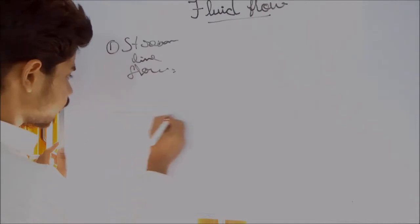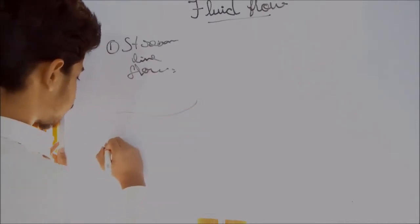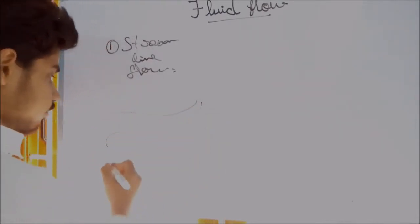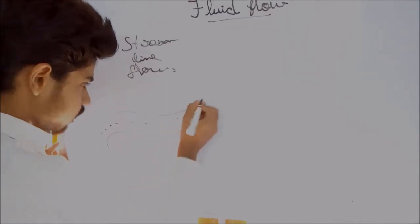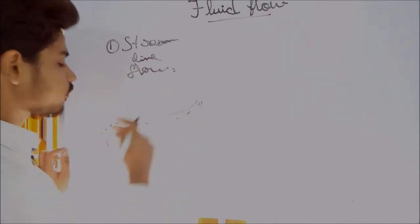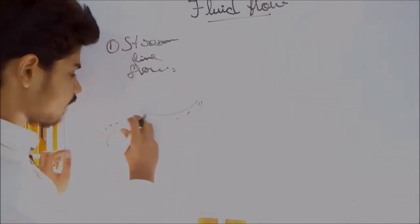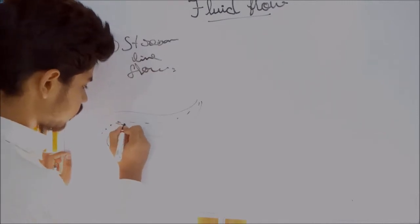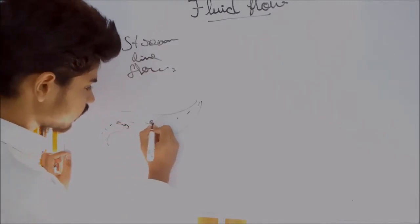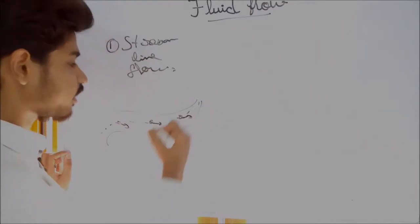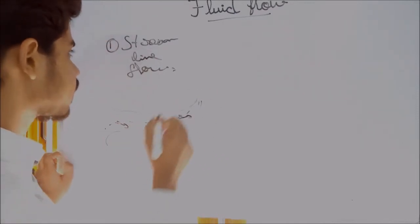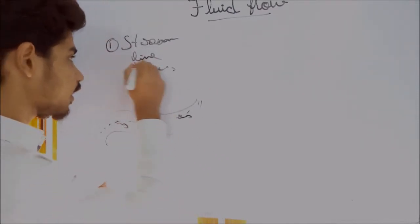Now we can see how many types of travel there are. So the fluid flow is traveling. If you look at a particle — one velocity, one particle — you can see that all the directions are going in one direction, one line.